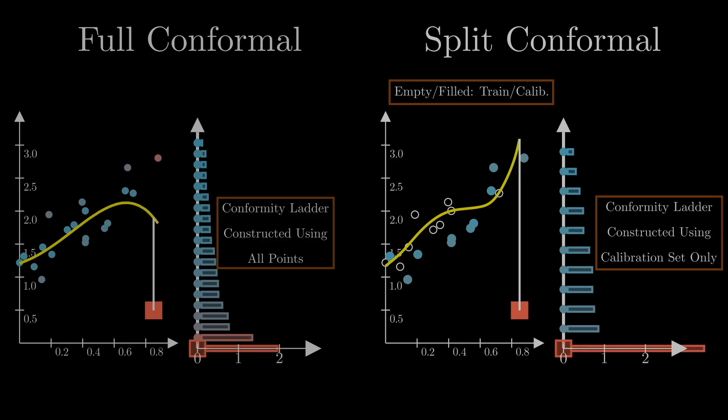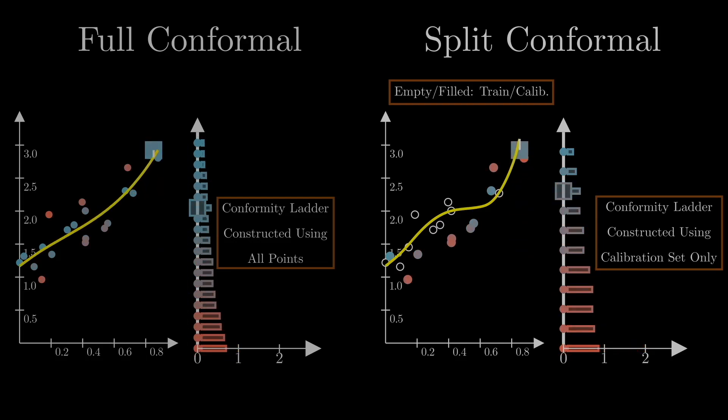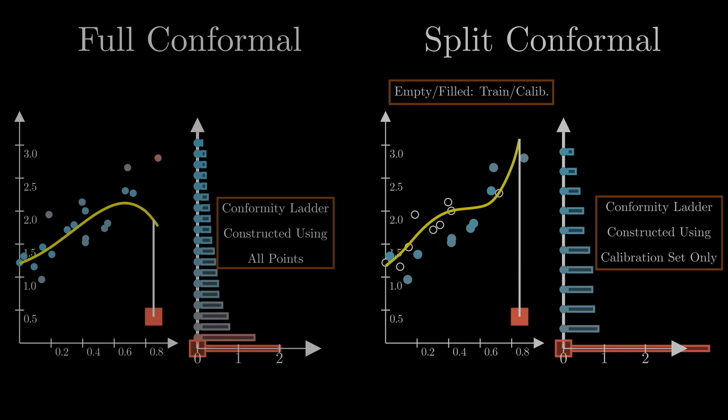With full conformal methods, the model is fit using all points including the test, which means moving the square will change the model. Whereas with split conformal methods, the model is fit on the training set only, and not on the calibration set or the test point. So moving the test point around does not change the model, which means the model needs to be fit only once.